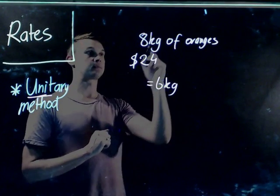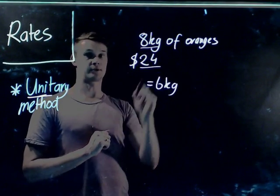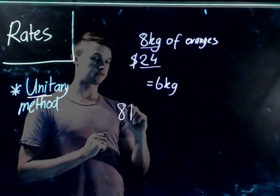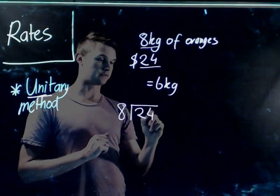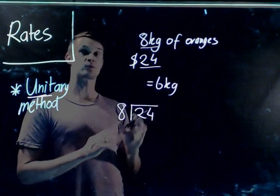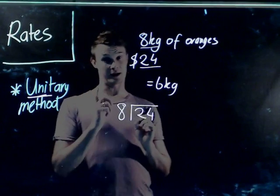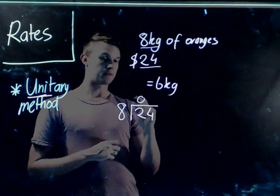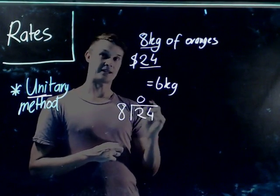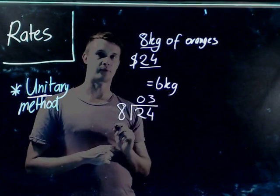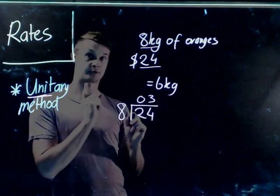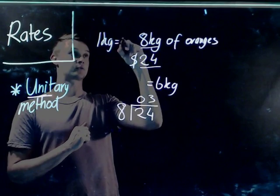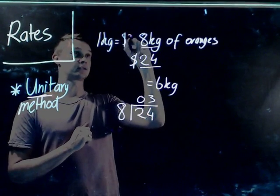The way you do that is simply divide your two numbers together. So if we divide twenty-four by eight, this will tell us what one kilo equals. Eight doesn't go into two, but eight, sixteen, twenty-four — it goes in three times. So one kilo equals three dollars.